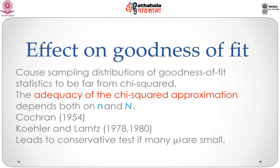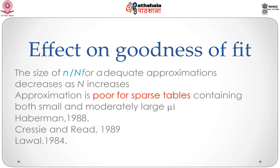The distribution of the goodness-of-fit statistic is usually poorly approximated when n/N is less than 5, and when most of the mu_i are smaller than 0.5. The G-squared statistic tends to give a highly conservative test. In general, the size of the ratio n/N that leads to adequate chi-square approximations will tend to decrease as N increases. However, the approximation tends to be poor for sparse tables containing both small and moderately large mu_i. See papers by Haberman 1988, Crecy and Reid 1989, and Lowell 1984.